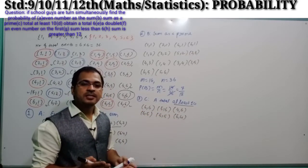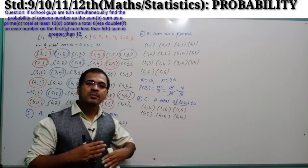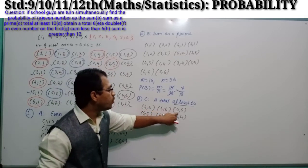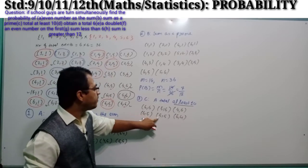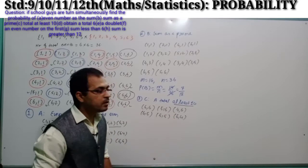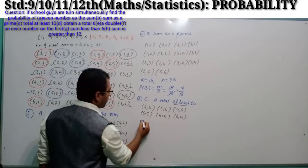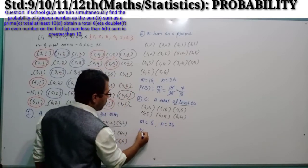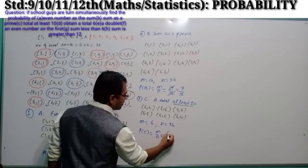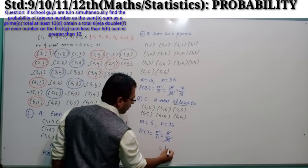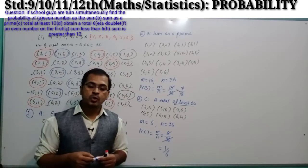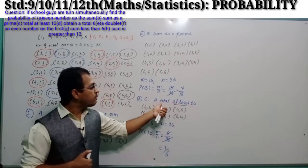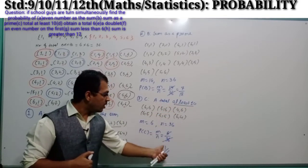The favorable events are: (6,6), (5,6), (4,6), (6,5), (5,5), (6,4). So M = 6 and total number of events N = 36. P(C) = M/N = 6/36 = 1/6. We can conclude that if two dice are thrown simultaneously, the probability that the sum on the dice is at least 10 is 1/6.